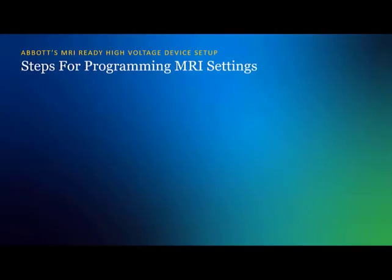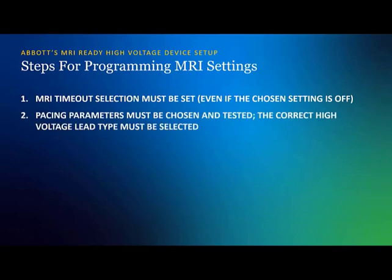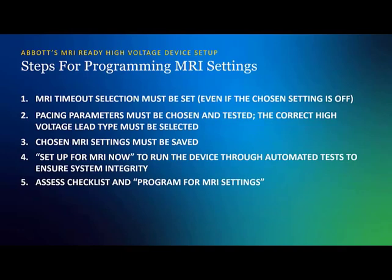It is important to note that it is necessary to proceed through every step in this process in order for the device to accurately switch into MRI settings. An MRI timeout selection must be set, even if the chosen setting is off. Pacing parameters must be chosen and tested. The correct high voltage lead type must be selected, and the MRI settings must be saved. This then activates the Setup for MRI Now button, which will run the device through automated tests to ensure system integrity. After assessing all factors of the MRI checklist and reviewing chosen MRI parameters, Program MRI Settings can then be pressed.